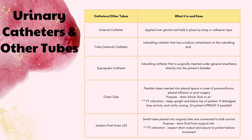Lastly we have the Jackson-Pratt drain, also known as a JP drain. This is a small tube inserted into the surgical site and connected to a bulb — they can look different, not always a standard bulb suction — and it helps drain fluid from that surgical site. The biggest thing for PT is inspecting the drain, seeing how full it is, and securing it to the patient before movement so it is not getting pulled on or hanging with gravity. Make sure it is attached either with a clip or with a brace.